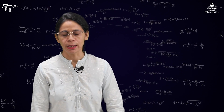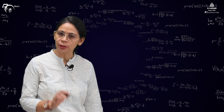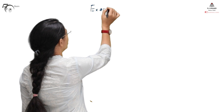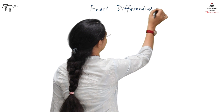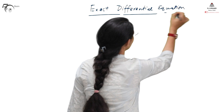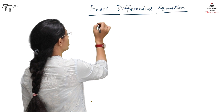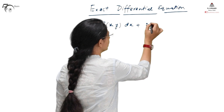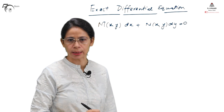We will start with the solution technique of the differential equation. This is the solution technique for a first order differential equation. We need to find out when a differential equation is called an exact differential equation. If a differential equation is given in the form M(x,y) dx + N(x,y) dy = 0, then we examine it for exactness.